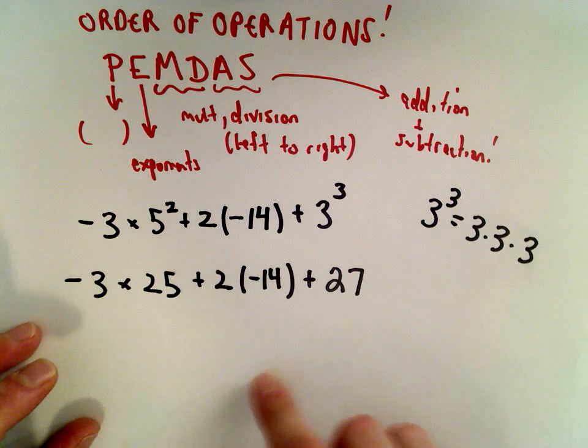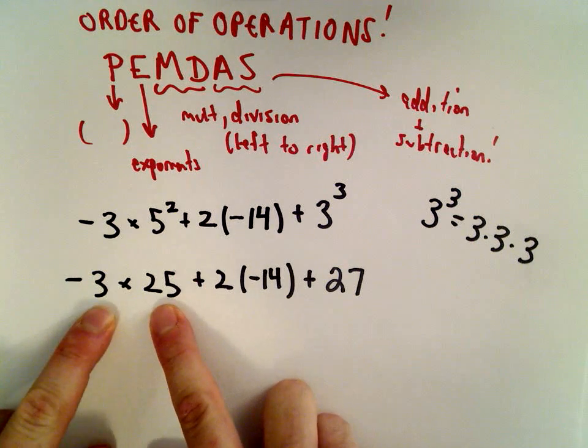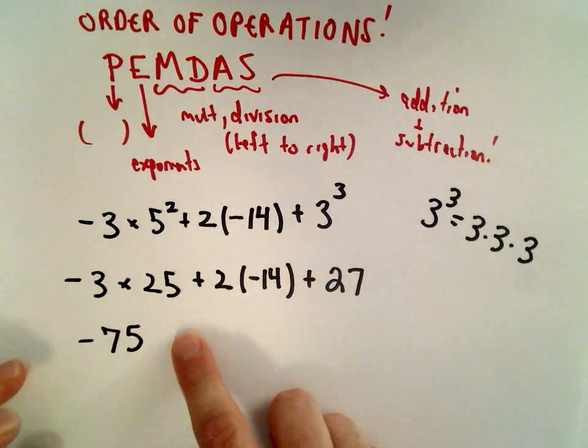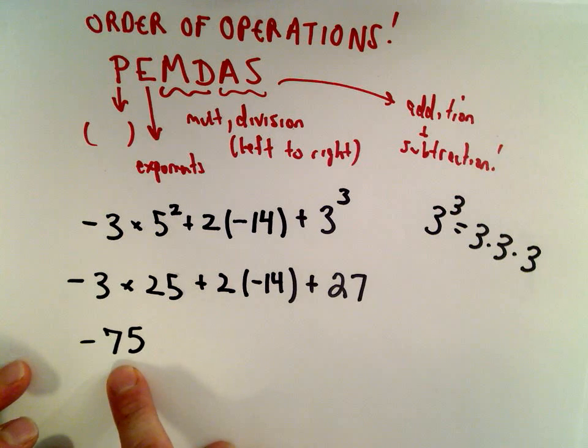Now we're going to do multiplication and division. We don't really have any division in this problem. Negative 3 multiplied by 25, that's going to be negative 75. Think about money: if I've got 3 quarters in my pocket, I've got 75 cents. A negative times a positive is going to be a negative.